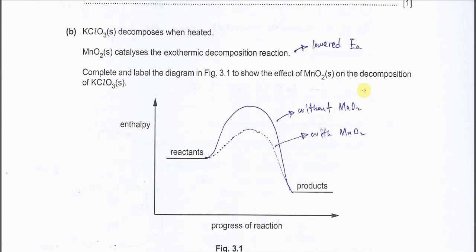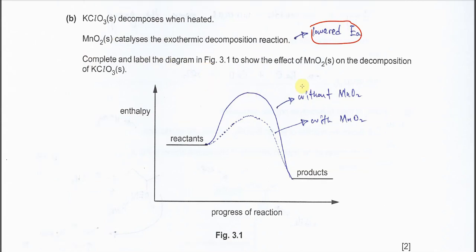Part B: KClO3 decomposes when heated. MnO2 catalyzes this exothermic decomposition reaction, and we know that catalyst always lowers the Ea and lets the reaction happen faster. Complete and label the diagram in figure 3.1 to show the effect of manganese oxide. This one with higher Ea, another one with lower Ea. The higher Ea is without the MnO2 catalyst. The lower Ea, the dotted line, is with the manganese oxide. With lower Ea, it can let the reactions happen faster.